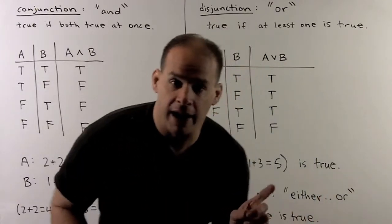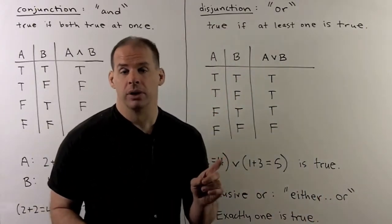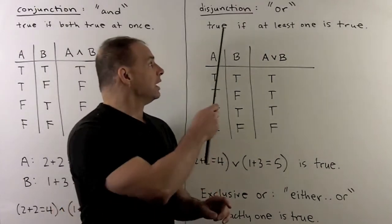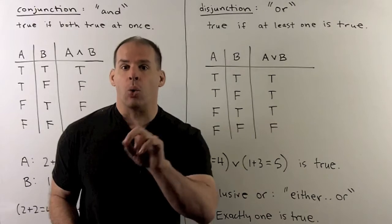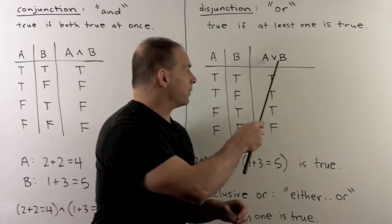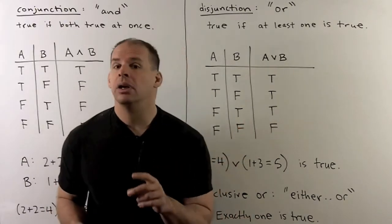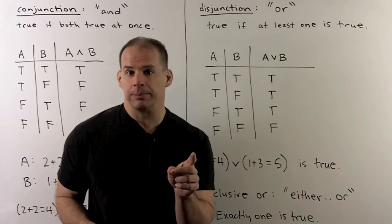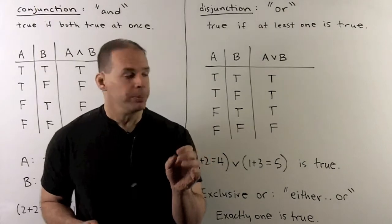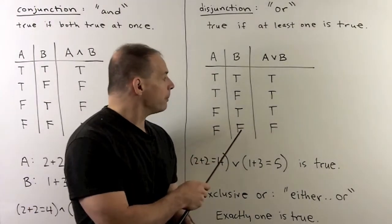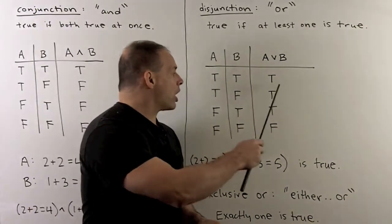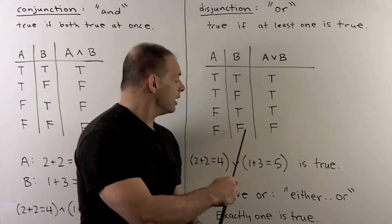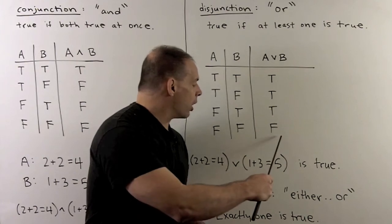Now, to go with and, we have or. So, this is going to be the operation of disjunction. Here, A or B, we write this with the hat flipped upside down. This is going to be true when at least one of A or B is a true statement. So, for the truth table, we set it up as before. Here, if we go across, we just check to see that there's a true in either one of these slots. So, we're only going to get a false in the last row.